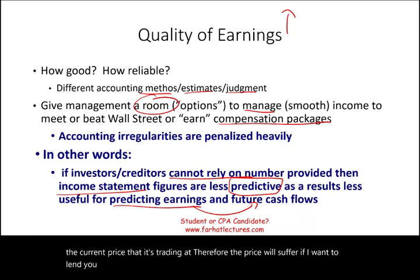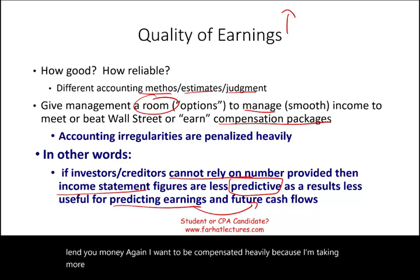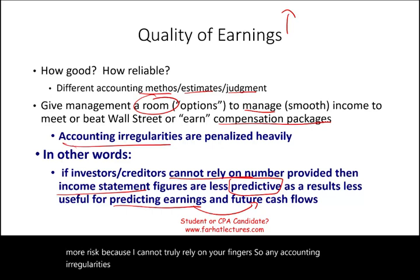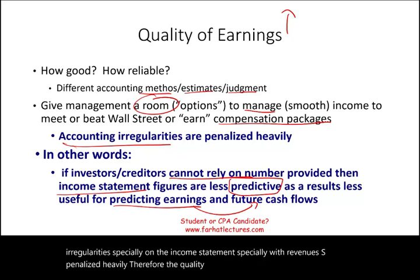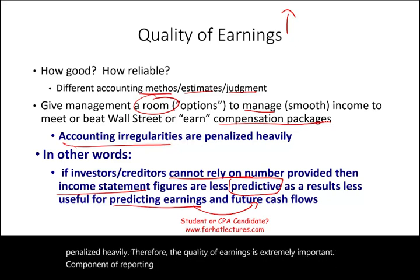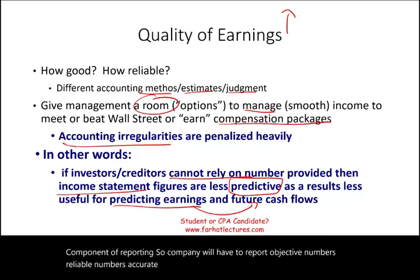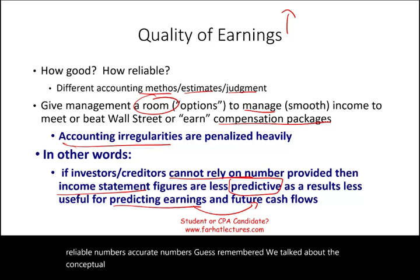Any accounting irregularity, especially on the income statement and especially with revenues, is penalized heavily. Therefore, the quality of earnings is an extremely important component of reporting. A company must report objective, reliable, and accurate numbers. Companies have to follow all the rules of the conceptual framework.